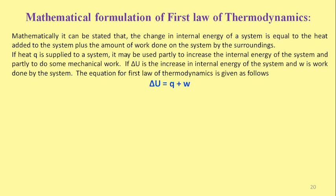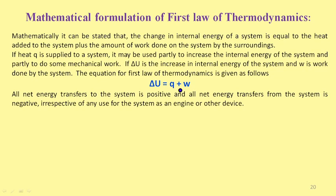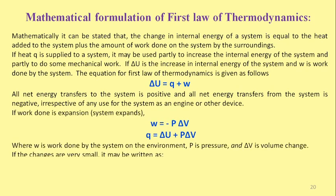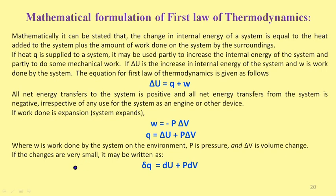Mathematically, the first law is given as ΔU = Q + W, where ΔU is the change in internal energy, Q is the heat absorbed by the system, and W is the work done. All net energy transfer to the system is positive and from the system is negative. If work done is expansion, W = −PΔV, where P is the pressure and ΔV is the volume change. Rearranging: Q = ΔU + PΔV, or for small changes: δQ = δU + PδV.